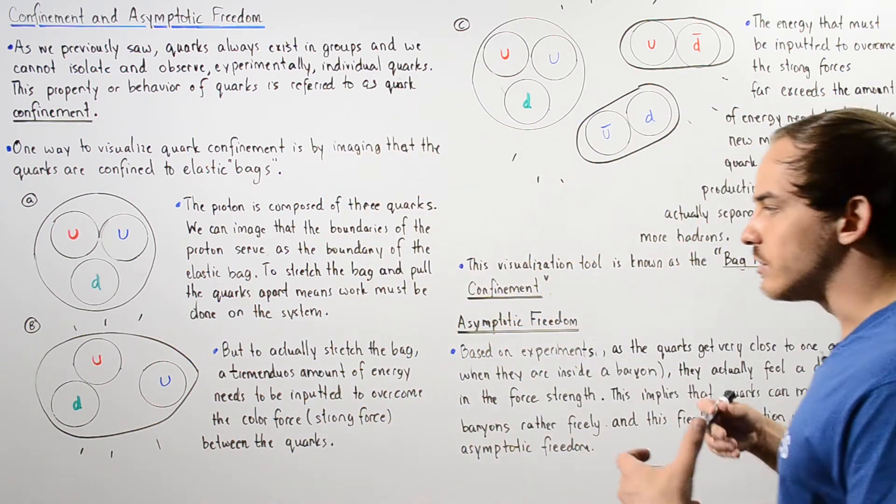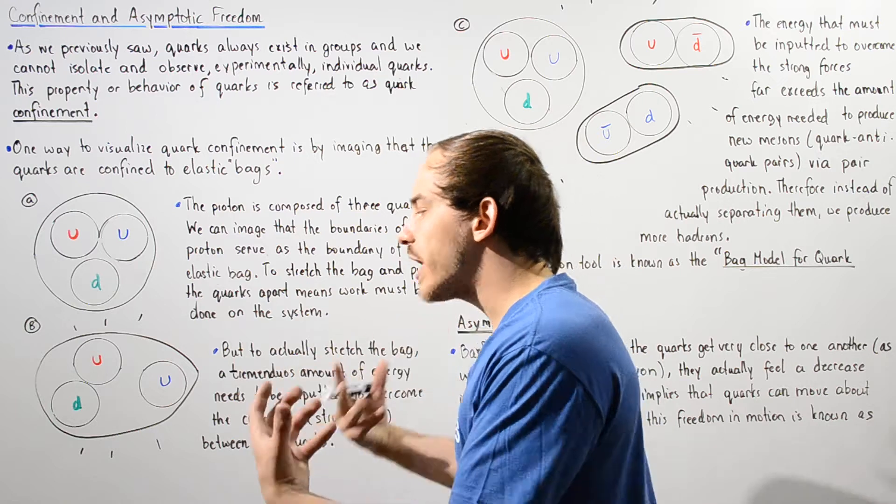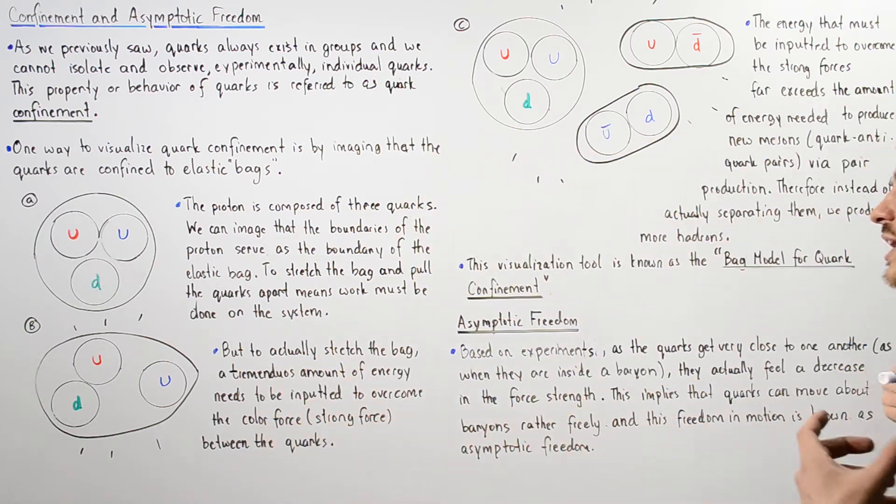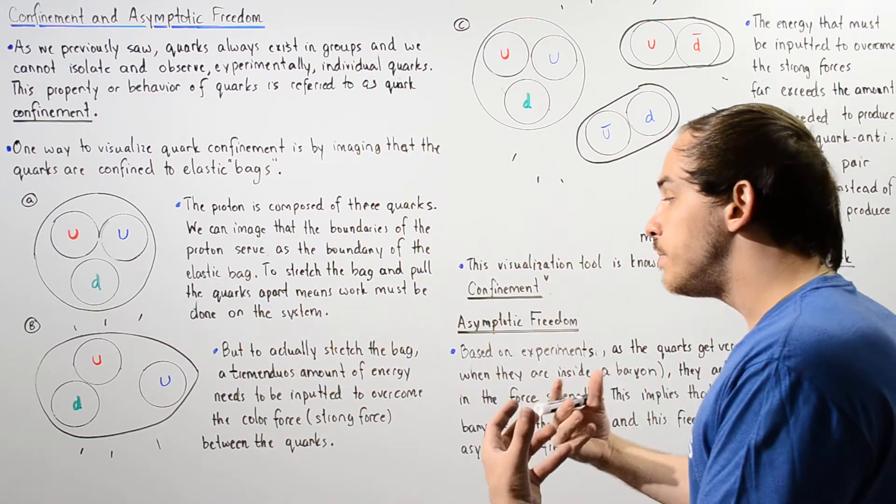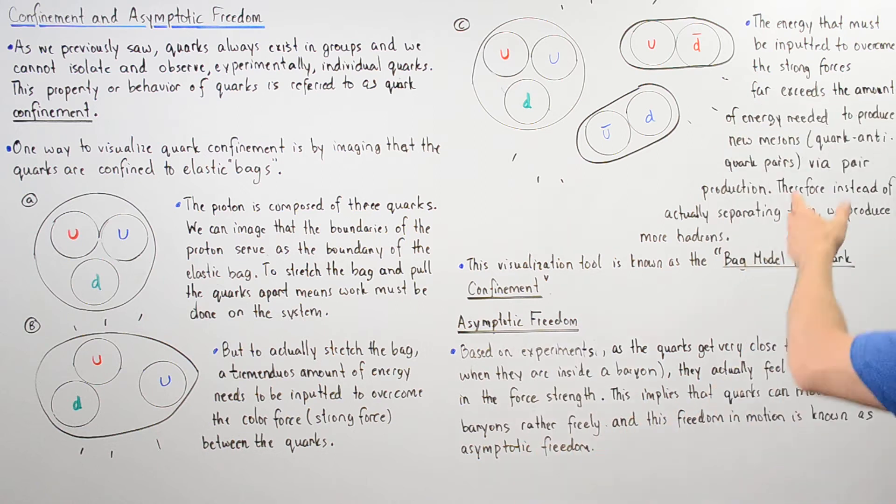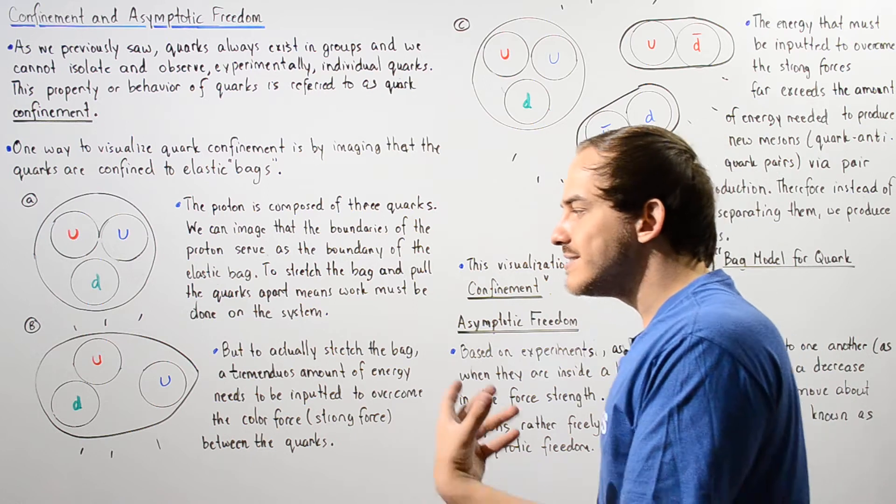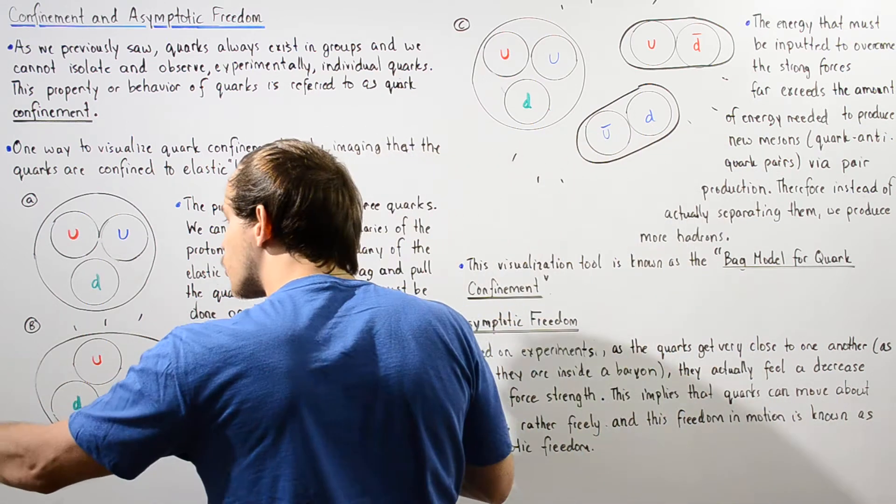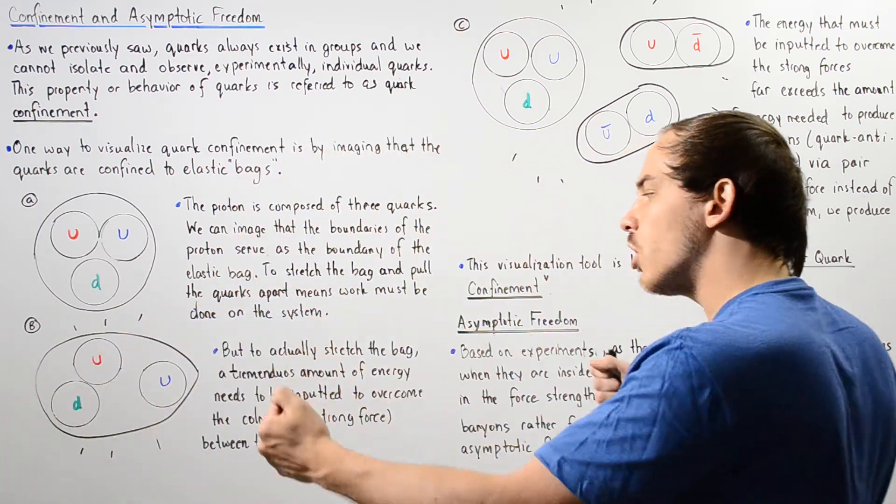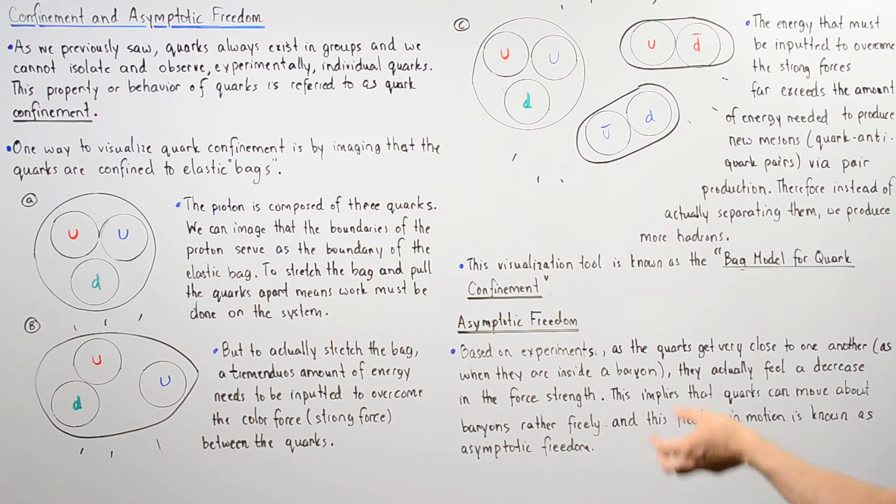When we input this great amount of energy, we input an amount that exceeds the energy needed to produce new mesons, the quark antiquark pairs via pair production. This means, instead of actually separating our quarks, we end up producing more mesons and more baryons, more hadrons.